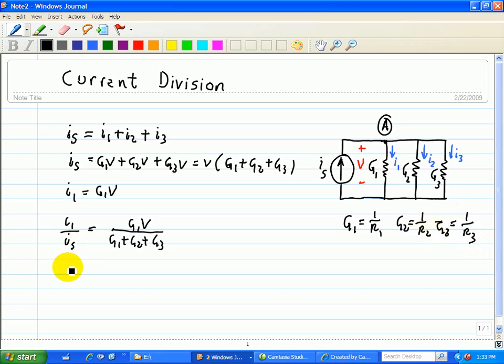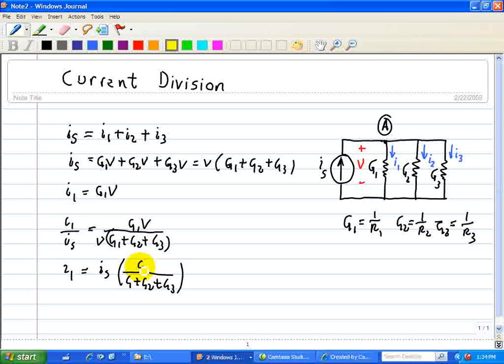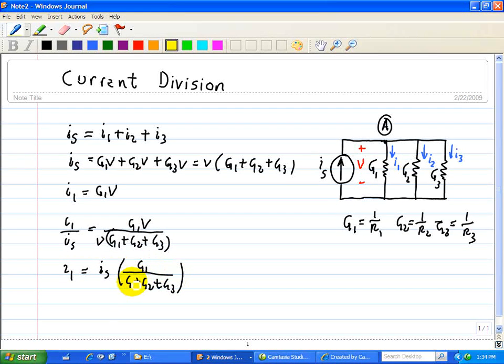So here's our current division, where we have I1 is equal to IS, our input current, I1 let's say is our output current, G1 over G1 plus G2 plus G3, where we have in the previous equation, which I failed to point out, that V over V cancels out. So we have our generic formula here, of I1 is equal to IS, our source current, times G1 divided by the sum of each of those conductances.